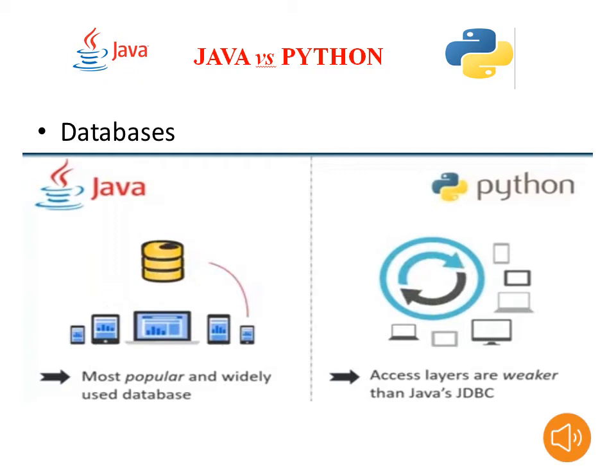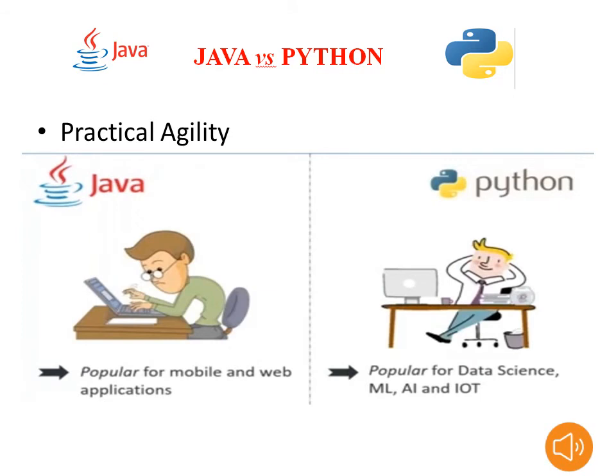Regarding databases: our data is always stored in a database. Python's database access layers are weaker than Java's. JDBC and ODBC are one of the best advantages and features of Java. When the requirement is to communicate with a database, we definitely prefer Java. For the database criterion, I vote for Java. So now we have two votes for Java and two votes for Python.